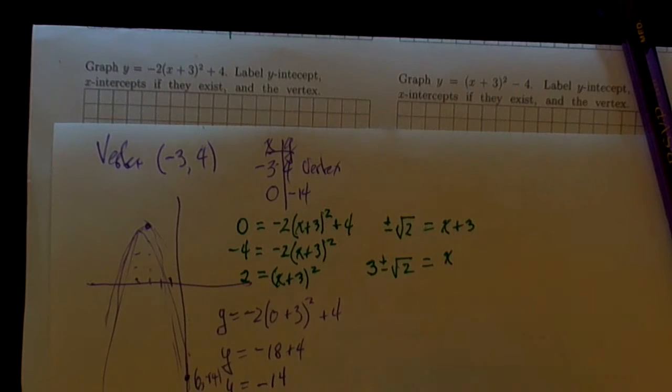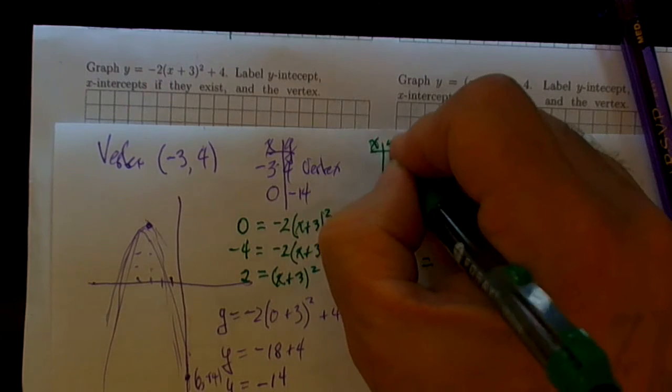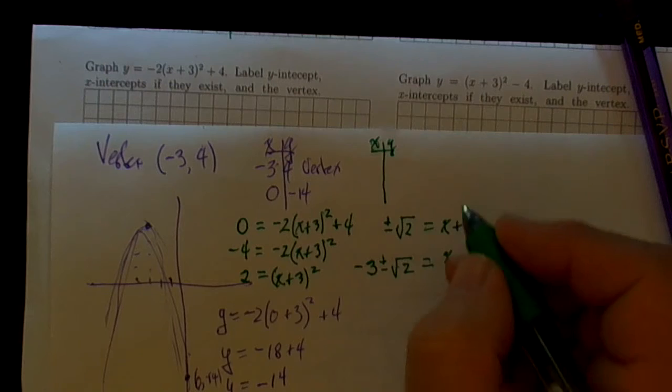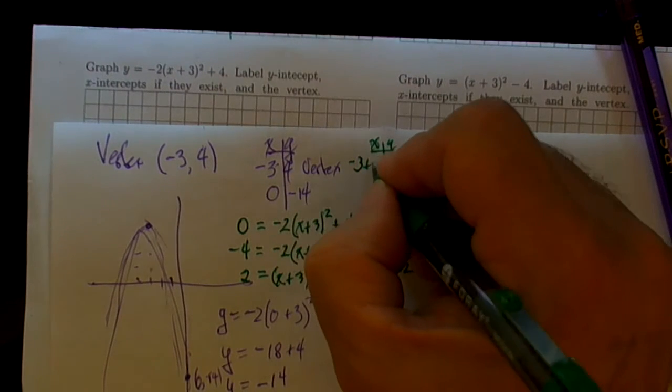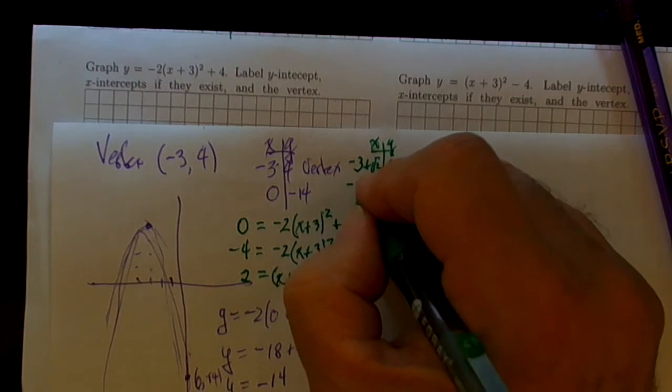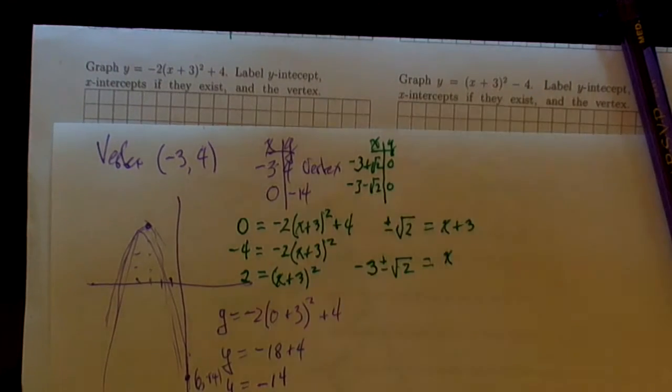Those are the two x-intercepts. Oh, careful—I subtracted 3 from both sides, so it's minus 3 plus the square root of 2 will give me a 0, and minus 3 minus the square root of 2 will give me a 0.